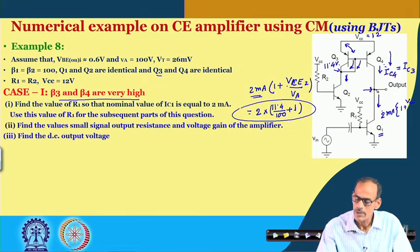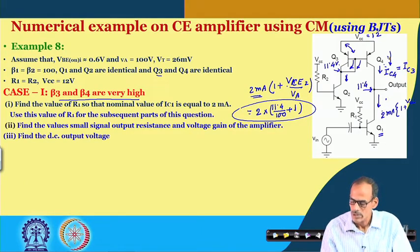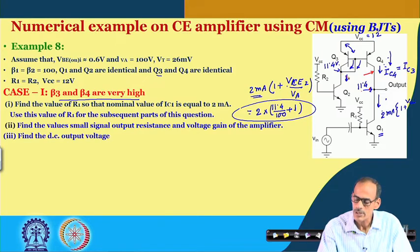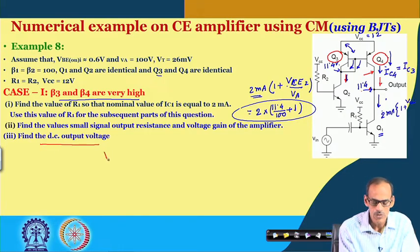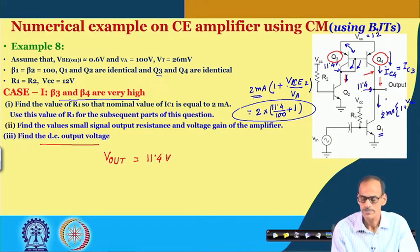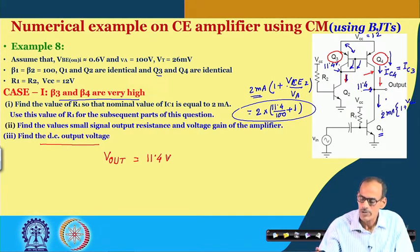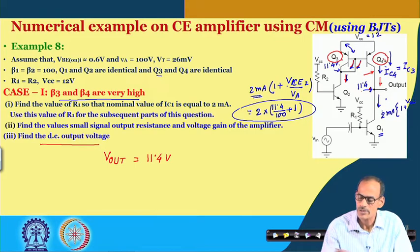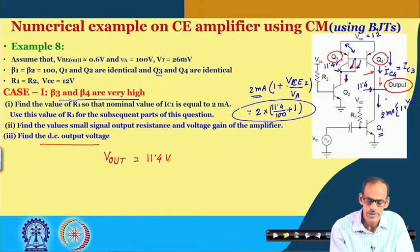If the output voltage here is 11.4V, then this current and this current become equal. Intuitively, if this voltage is 11.4V, the current here and current here are equal, and also the currents in transistor 3 and transistor 4 are equal. That makes everything consistent. So the DC output voltage Vout should equal 11.4 volts. But if the Early voltage or the base current cannot be ignored, there will be a mismatch and the DC voltage will deviate.